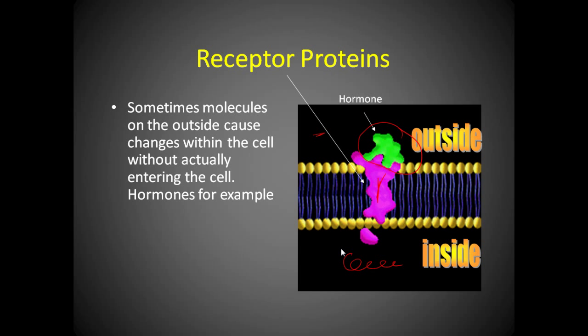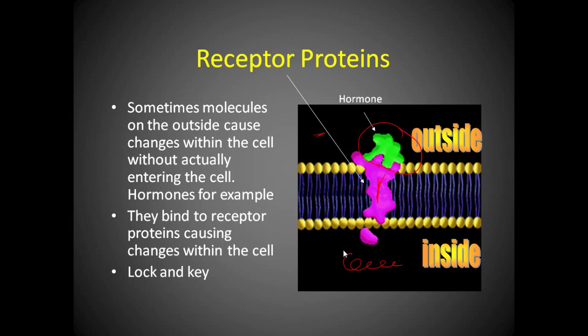Sometimes molecules on the outside will bind and cause changes on the inside, just like I told you. A lot of drugs will work this way. Medications will bind to some of these receptor proteins. We're going to talk about neurotransmitters in the brain that conduct signals, they bind to receptor proteins. But again, the key is they have to fit. They have to fit to that receptor protein. It's a lock and key kind of mechanism.